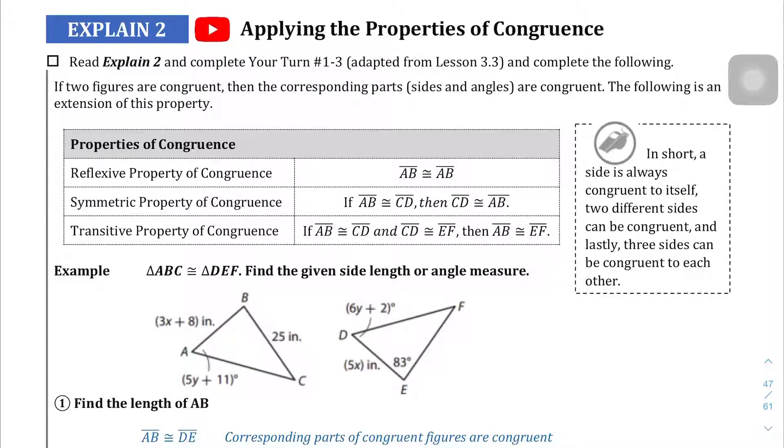We're on the Explained 2 section on page 47 of this credit, and in this section we're talking about the properties of congruence and actually applying them. In the last video we started identifying the congruent parts to corresponding triangles. I won't go into detail on the Explain section, but there are three properties of congruence: the reflexive property, the symmetric property, and the transitive property. Instead of just explaining them, I think the best way is to do a problem and explain as we go along.